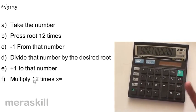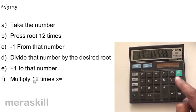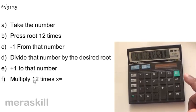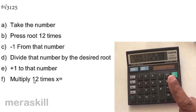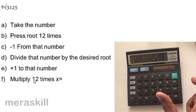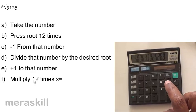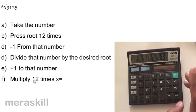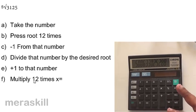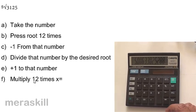To recap: you take the number, press the square root sign 12 times, subtract 1, divide by n (the root you want — divide by 5 for a fifth root, by 6 for a sixth root), then add 1 back to compensate. Finally, multiply it by itself 12 times by pressing the into-and-equals combination 12 times, and you get the desired nth root. This method will help you a lot when doing calculations on compound interest and annuities.